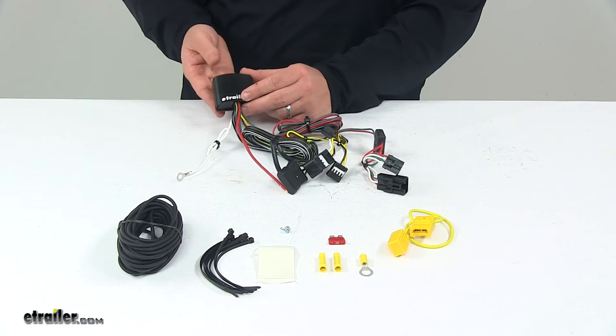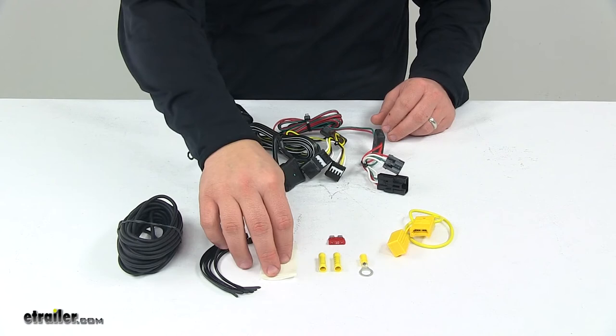Then you'll need to mount the converter box to a safe out of the way location, and you can do that with the included double-sided adhesive foam tape.